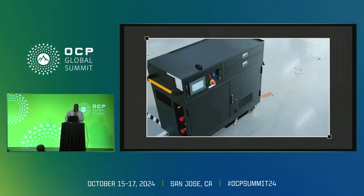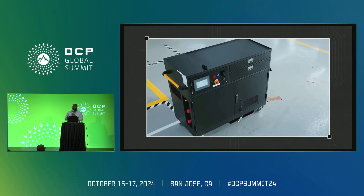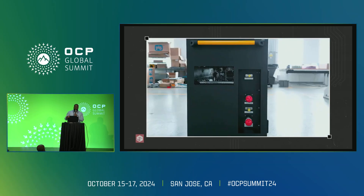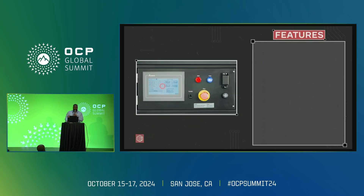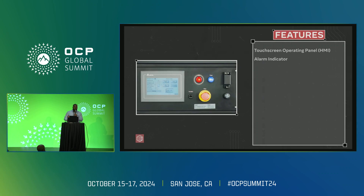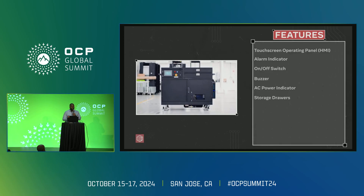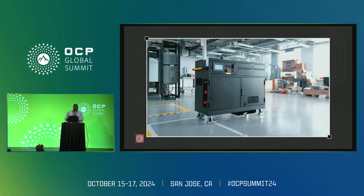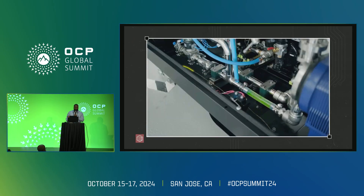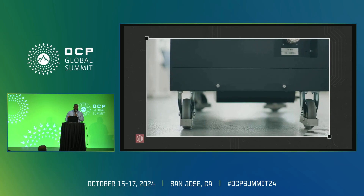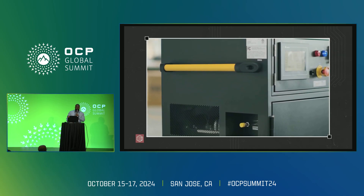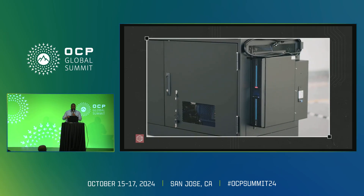The audio isn't working well, so I'll speak to the video as it plays. This was taken in our lab in Menlo Park. You can see the different fluid ports on the side, and the operating panel with a touchscreen for controlling the cart, an alarm, power button, buzzer, and emergency stop. At the bottom is our fluid cabinet, which has all the reservoirs. We also have leak detection — if there's any spill inside the cart it alerts the user and stops the pumps.